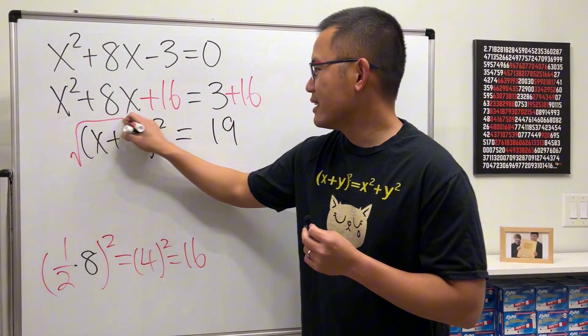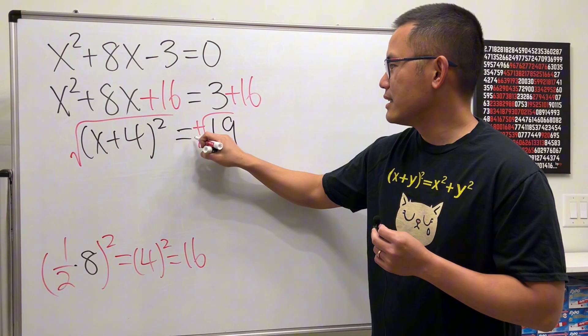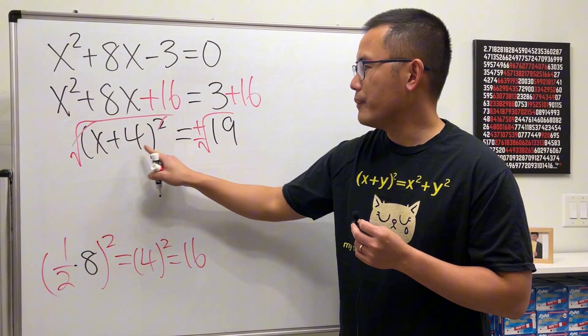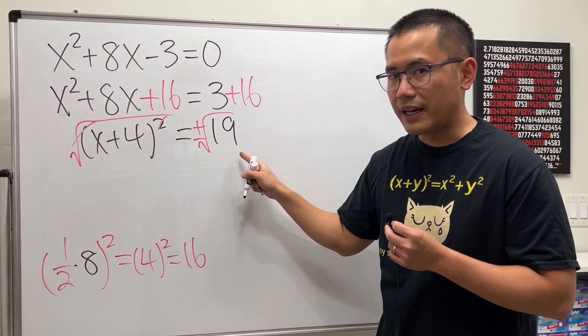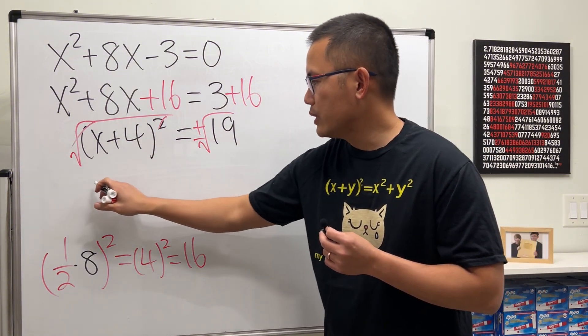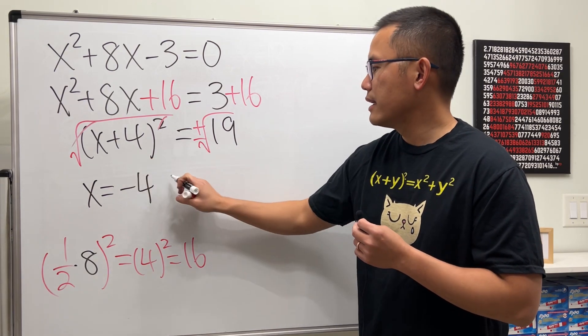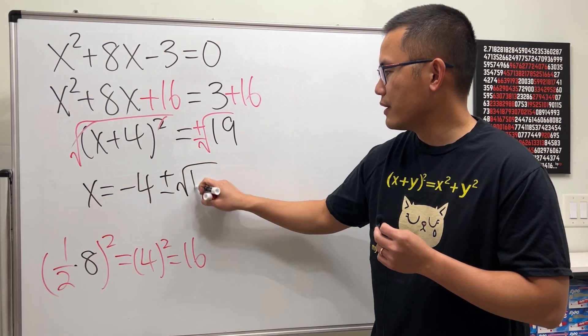Then we can just take the square roots of both sides, get rid of this and that, and then we get x + 4 equals plus or minus square root of 19. Subtract 4 from both sides, we get x equals negative 4 plus or minus square root of 19.